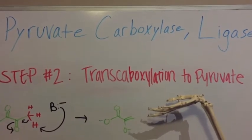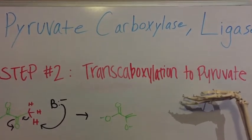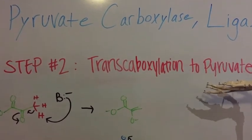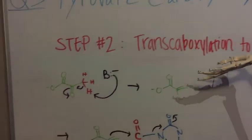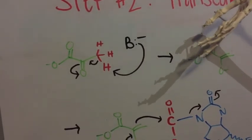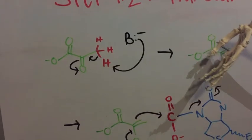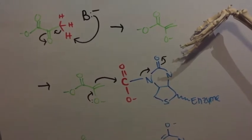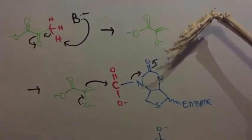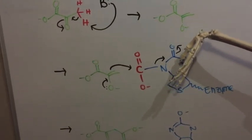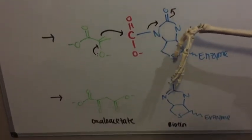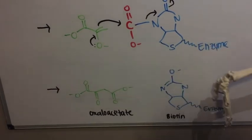Step two is the transcarboxylation to pyruvate. This is where the carboxyl group on the biotin compound gets transferred to pyruvate to form oxaloacetate. The reaction looks like this — that's pyruvate. The first step starts with a base removing a proton, which makes this intermediate. This intermediate of pyruvate is now able to react with biotin to get carboxylated. Here's biotin with the carboxyl group — you can see it being transferred over to the pyruvate intermediate. The end result is oxaloacetate, now separated from biotin.